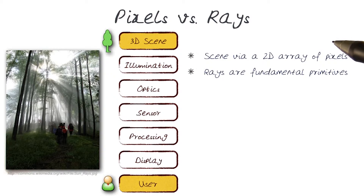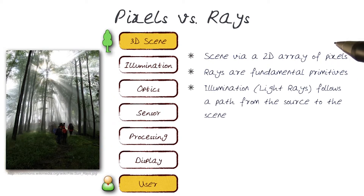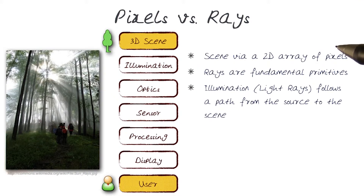We want to look at information that's coming and hitting the scene and getting reflected. We want to capture as much information from the environment based on the illumination and the rays that are hitting the scene. Rays of light follow a path from the source to the scene, so we can use the geometry of rays of light to extract information about what the scene is like.